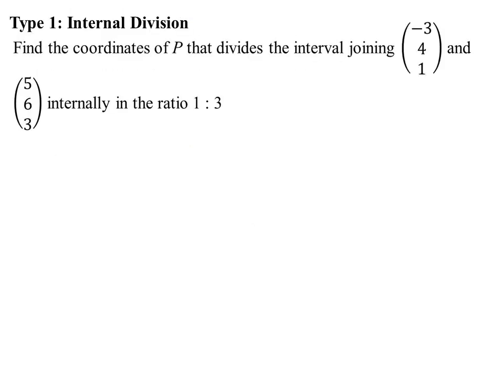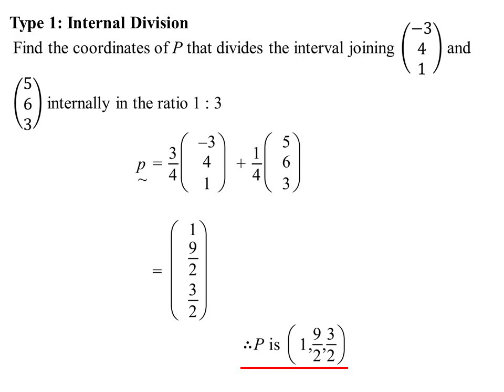We'll do an internal division. So P divides the interval joining these ones internally in the ratio 1 to 3. So bang, there it is. The bottom of the fraction are the two numbers added together. So 1 and 3 is 4. The top of the fraction, I get the ratio, swap it round. So it becomes three quarters times that first vector, one quarter times the second vector. And then it's just a bit of calculation. And we get this lovely vector 1, 9 on 2, 3 on 2. If they're asking for the coordinates of the point, then I'll rewrite it as 1, 9 on 2, 3 on 2.